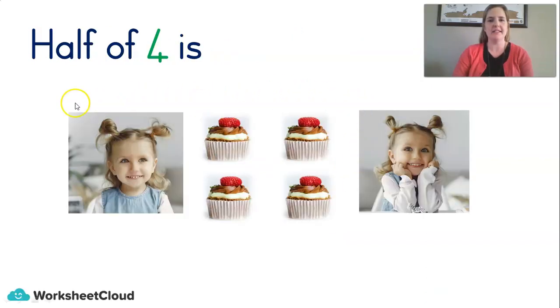Good. Right. Last time on our previous lesson, we did doubling and halving. So, do you remember this? Half of four. We've got some twins over here. They need the same amount of cupcakes each. We've got four in total. So, if you chop it in half, how many do they each get? One, two. Good. So, half of four is two.